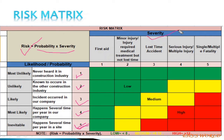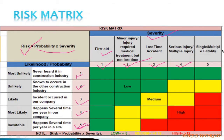For severity: 1 is first aid. 2 is minor injury requiring medical treatment but no lost time. 3 is a lost time accident requiring medical treatment where the injured person needs time off. 4 is serious or multiple injury, such as multiple fractures. 5 is single or multiple fatality — if a fatality occurs after any accident, the severity is 5.